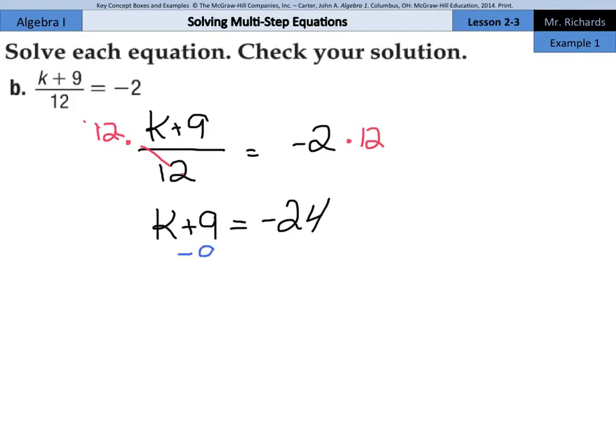And if I subtract the 9 from both sides of the equation next, k is going to equal negative 33.